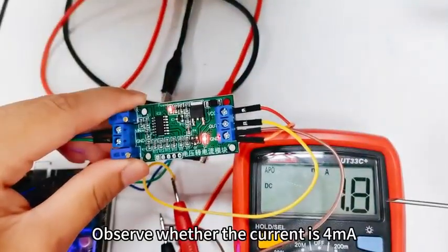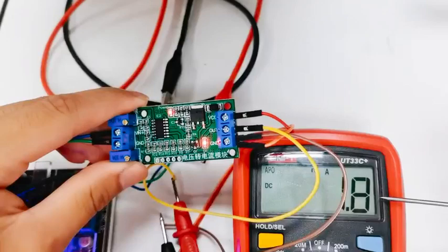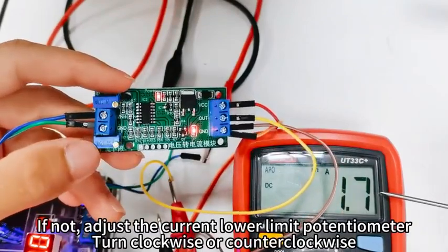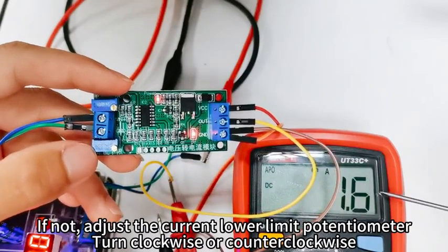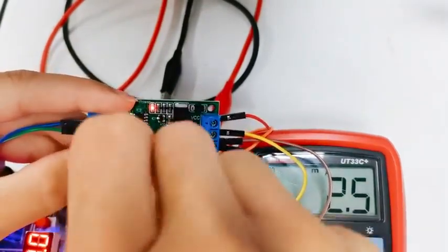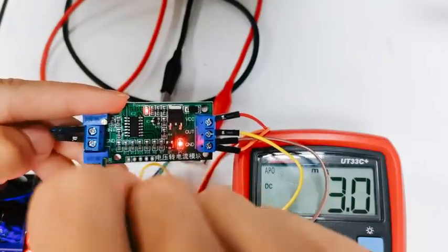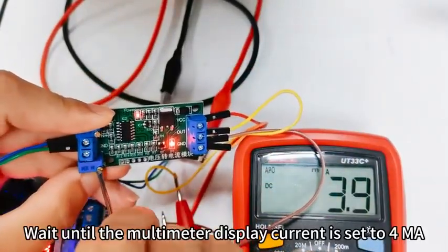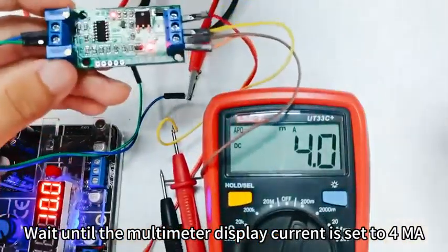Step 5: Observe whether the current is 4mA. Step 6: If not, adjust the current lower limit potentiometer, turn clockwise or counterclockwise. Wait until the multimeter display current is set to 4mA.